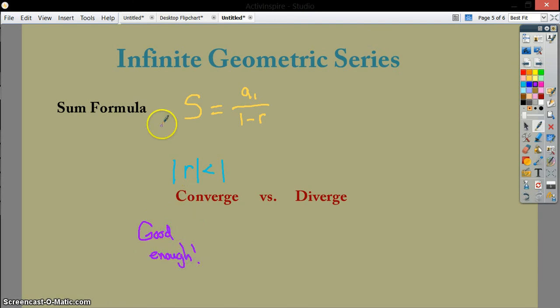So when we have a common ratio that's less than 1, I'm multiplying by a number that's a fraction, I can say it's probably good enough to say that I can make a sum out of it.